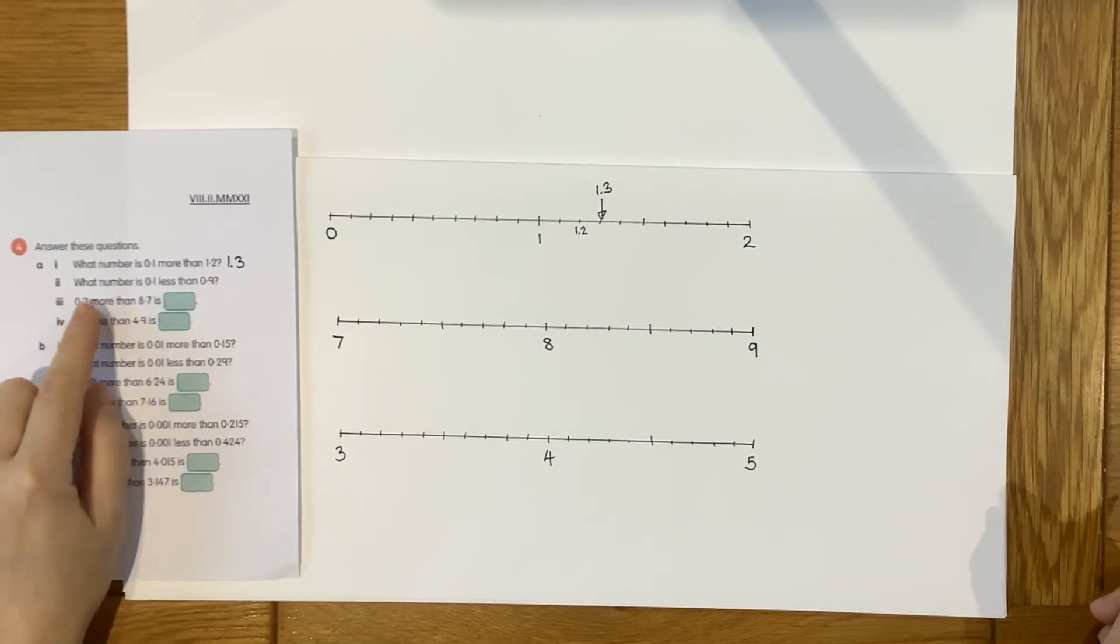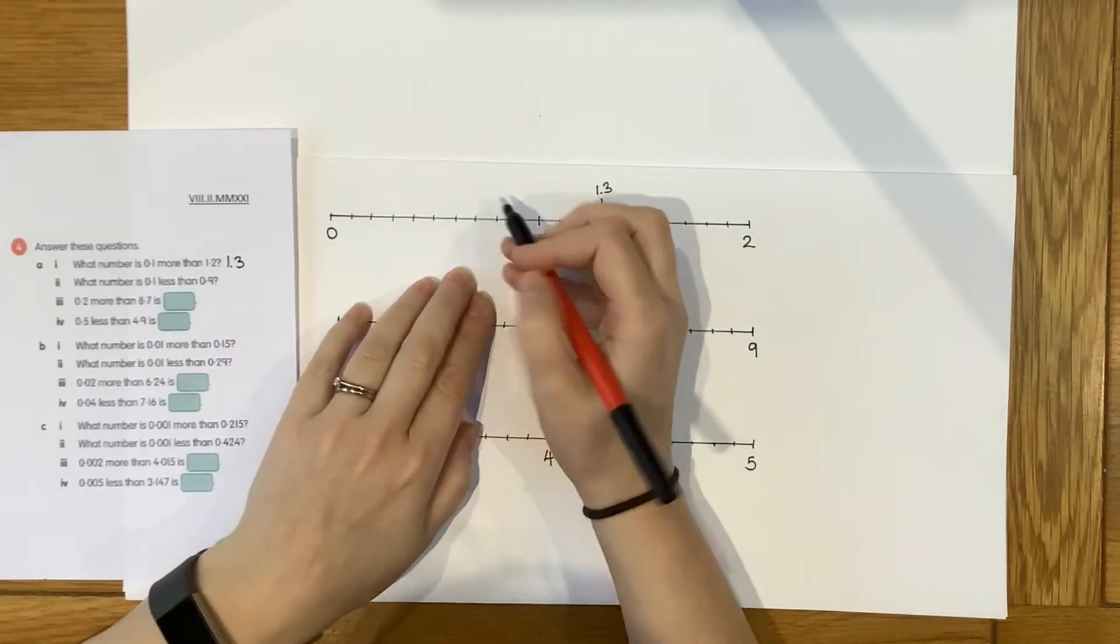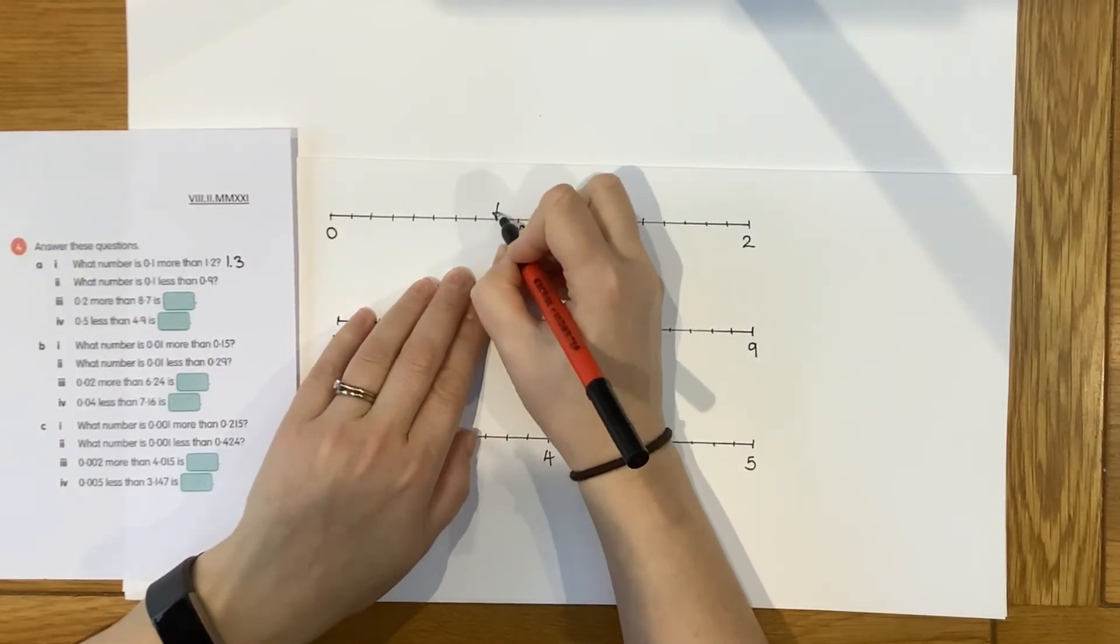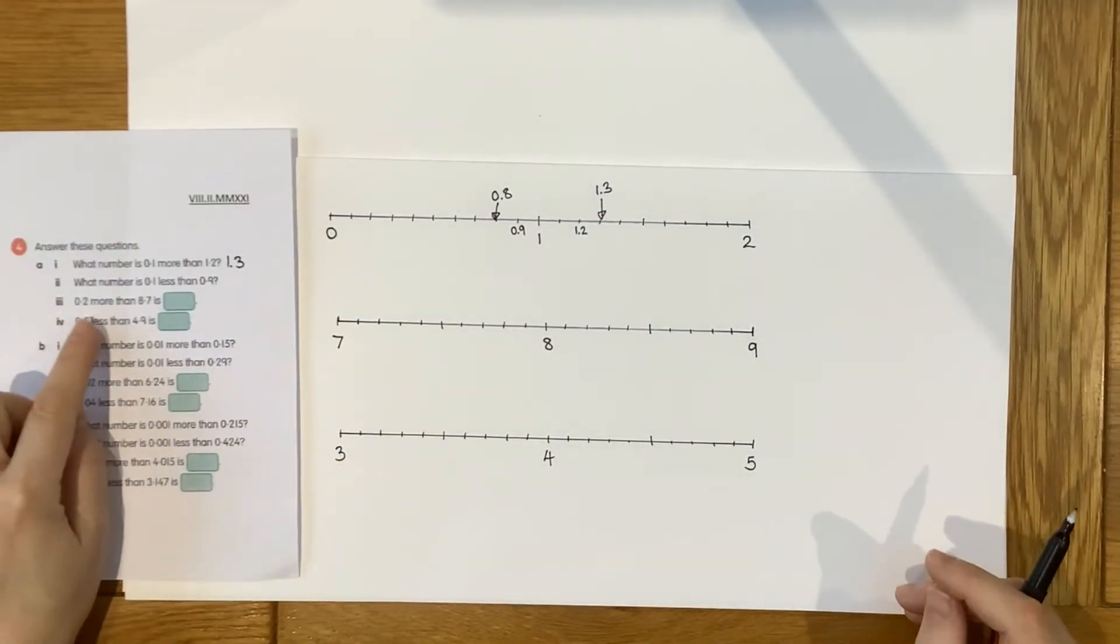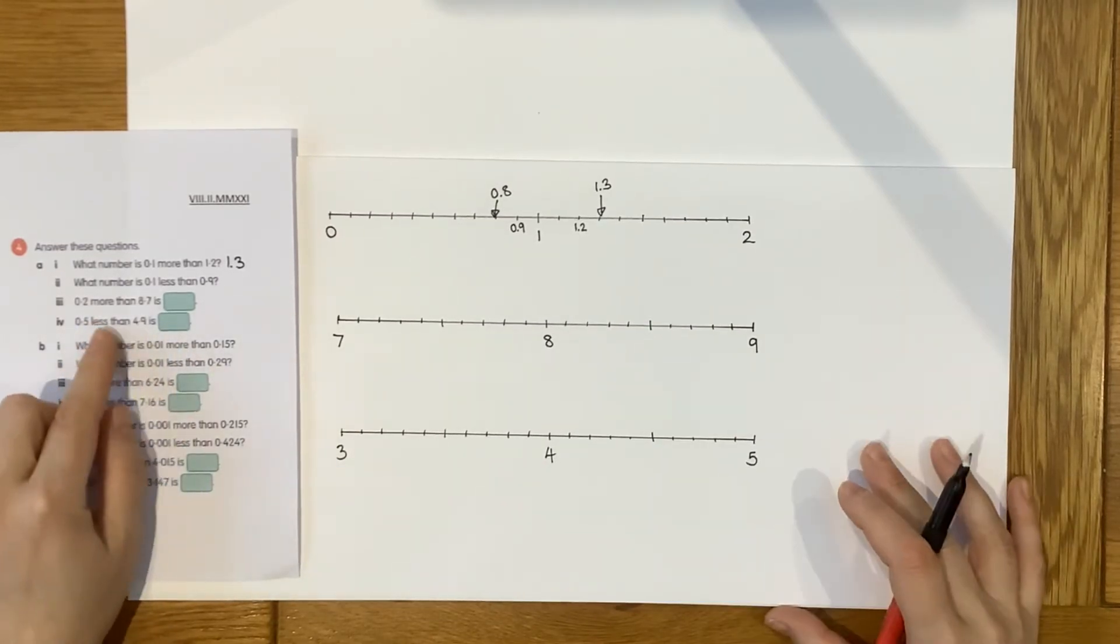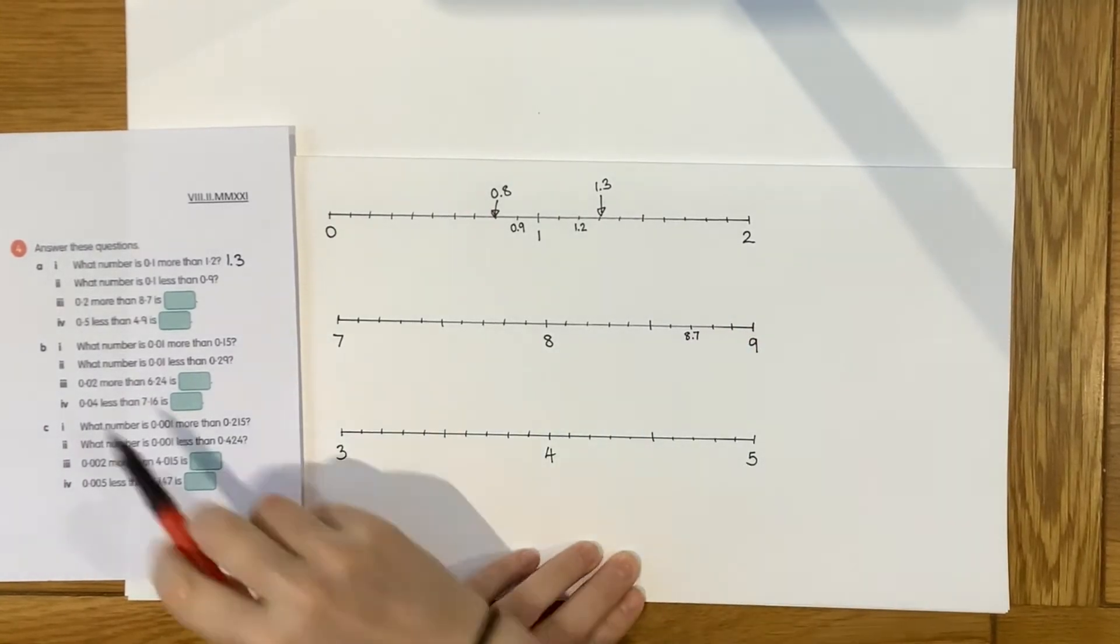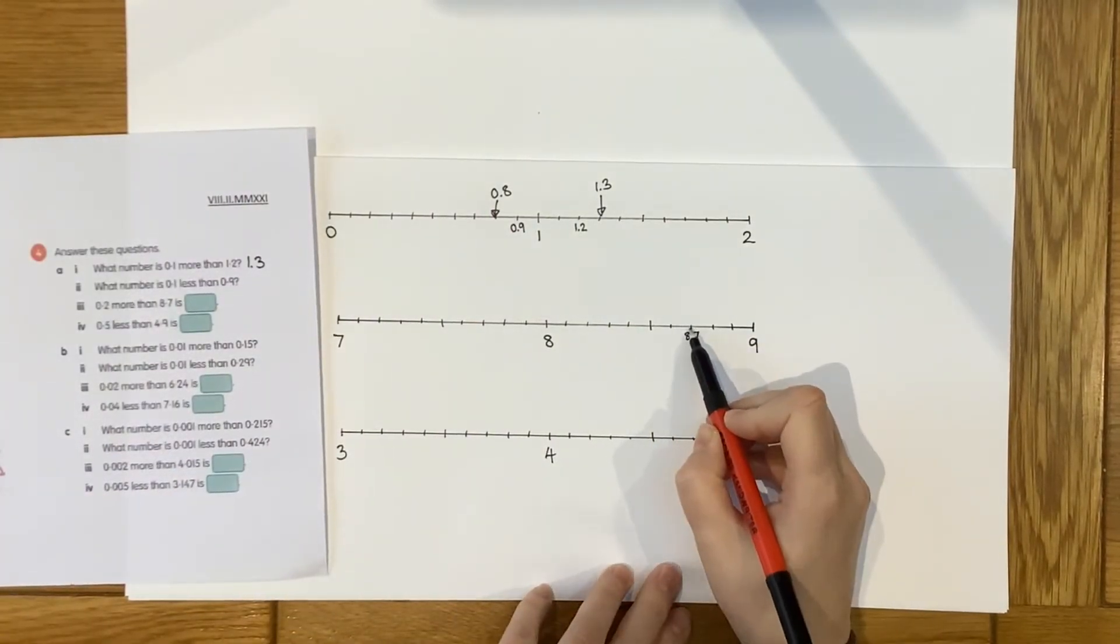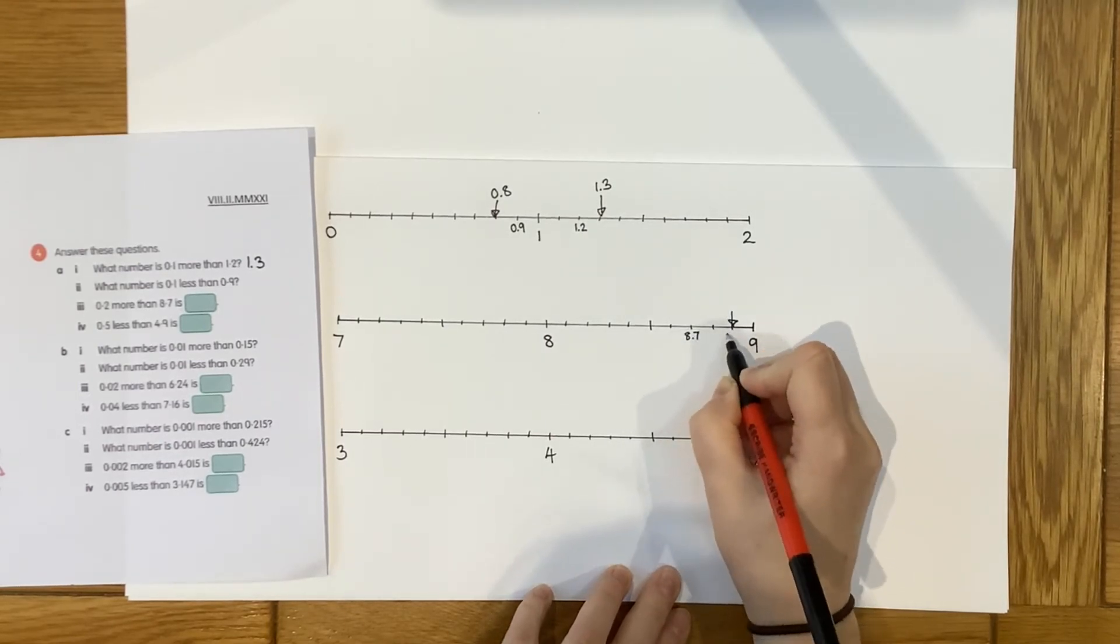Okay, let's look at the next one. What number is 0.1 less than 0.9? Now, I can use the same number line, because 0.9 is going to be here. And 1 tenths less, so I'm going in this direction, is going to be 0.8. Okay? Number 3, 0.2 more than 8.7. Right, so this time I'm doing 2 tenths. 8.7 is here on my number line. 0.2 more means I'm going to go 2 tenths up the number line. So I'm going to be here, which is 8.7, 8.8, 8.9.